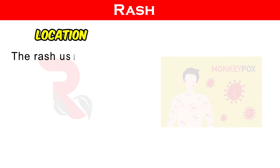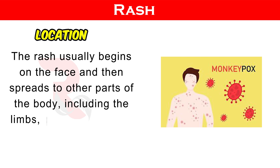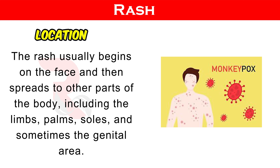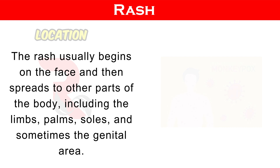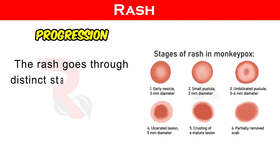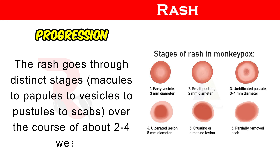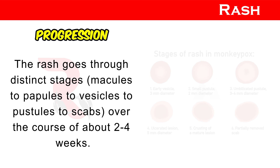Location: The rash usually begins on the face and then spreads to other parts of the body, including the limbs, palms, soles, and sometimes the genital area. Progression: The rash goes through distinct stages — macules to papules to vesicles to pustules to scabs — over the course of about 2 to 4 weeks.